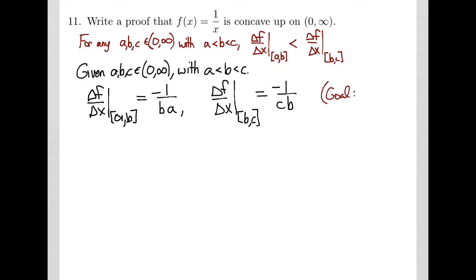My goal is to show that negative 1 over ba is less than negative 1 over cb. Notice that 1 over b appears in both expressions. At the same time, I know in advance that a is less than c. So my proof is going to start by knowing that a is less than c and will create a sequence of inequalities that are consequences, ultimately leading to the inequality I want.